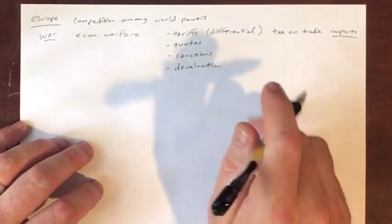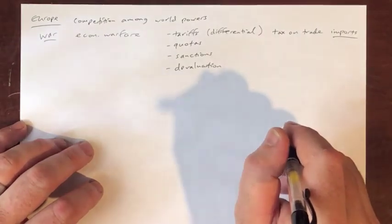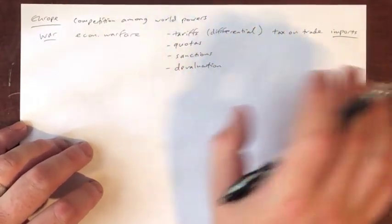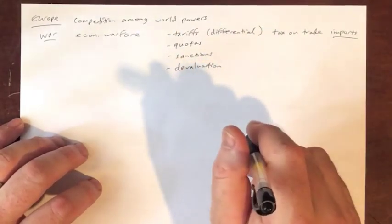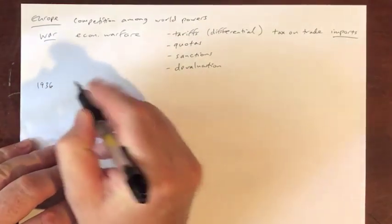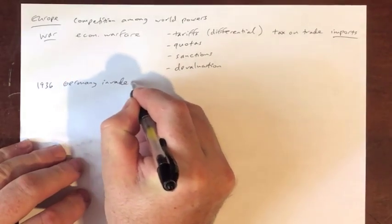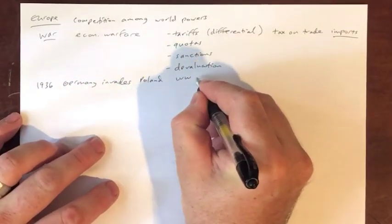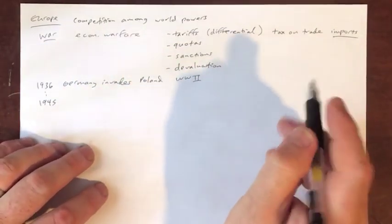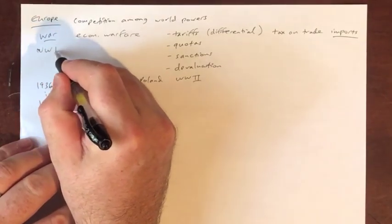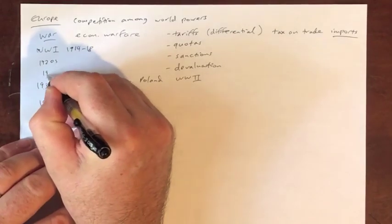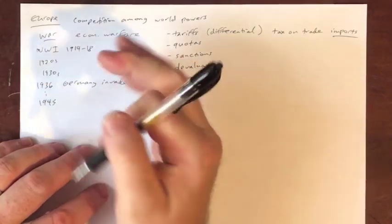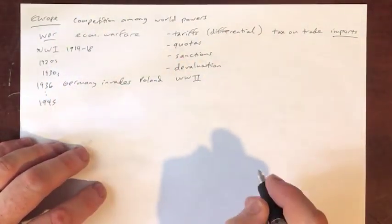Keynes weighs in on this — he was basically unknown before writing his famous essay on the economic consequences of the peace, arguing that the debt placed on Germany by the Treaty of Versailles was too high to meaningfully be paid and would cause problems. He was right. That ultimately leads to 1936 when Germany invades Poland, beginning World War II, which lasts all the way to 1945.